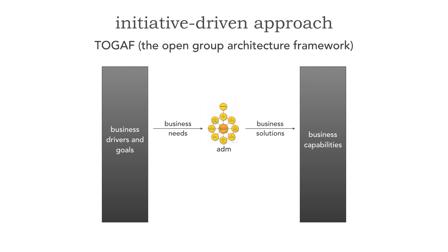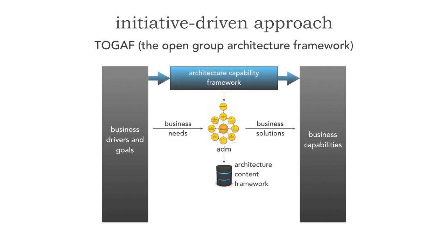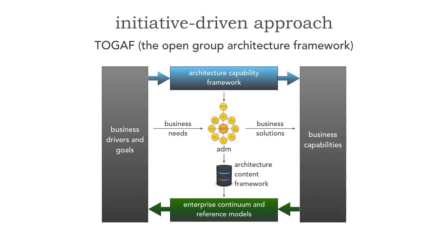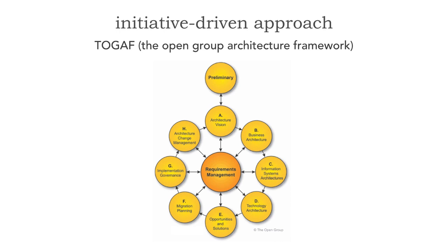All of the artifacts in TOGAF that we produce — and this is that initiative-driven approach — that modeling is saved for potential reuse and leverage with the ACF, the Architecture Content Framework. Within TOGAF we also have the Architecture Capability Framework, which is more at the project management level and feeds back through the enterprise continuum and reference models to leverage building blocks and reuse. Central to all of this is the Architecture Development Method, the ADM, which has phases A through H, allowing us to iteratively find those solutions.